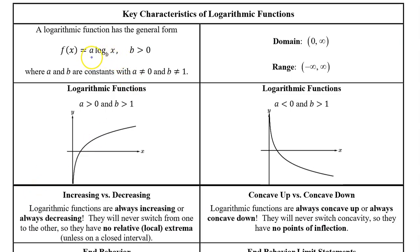Here's the general form of a logarithmic function. B has to be greater than zero and it cannot equal one. A cannot equal zero, otherwise we would have nothing.